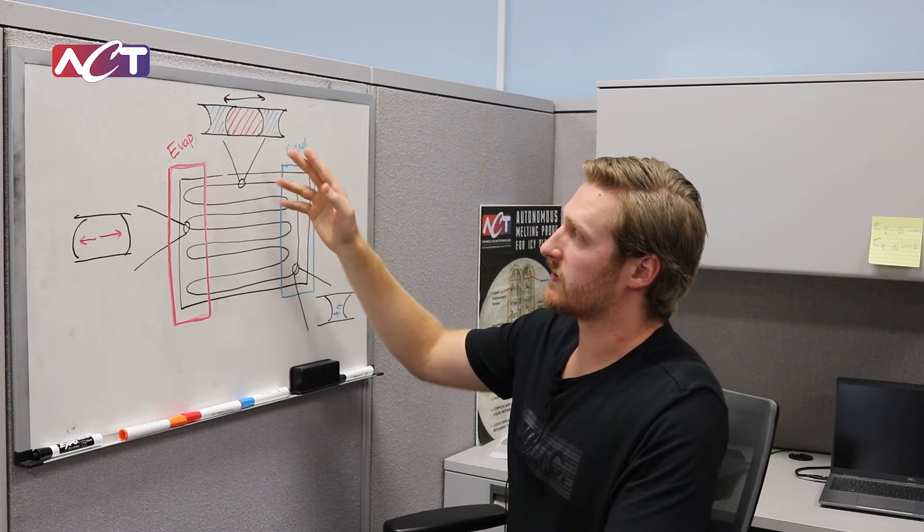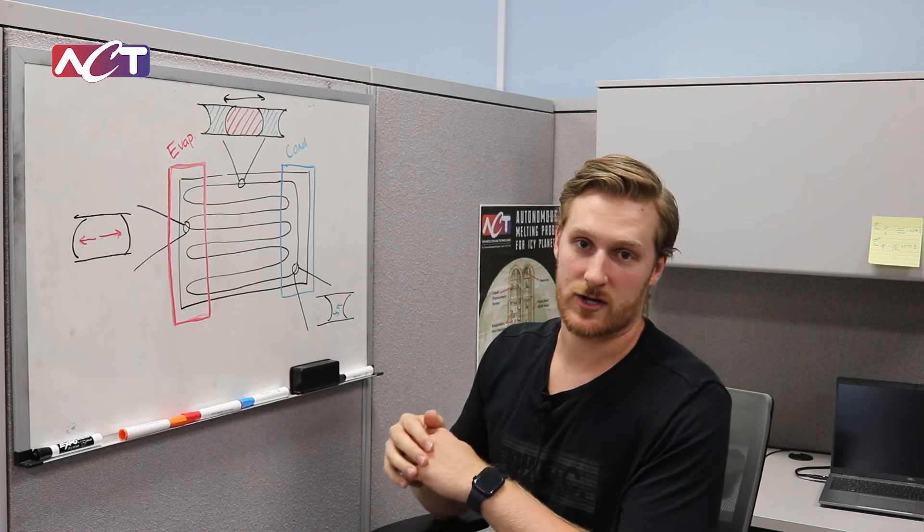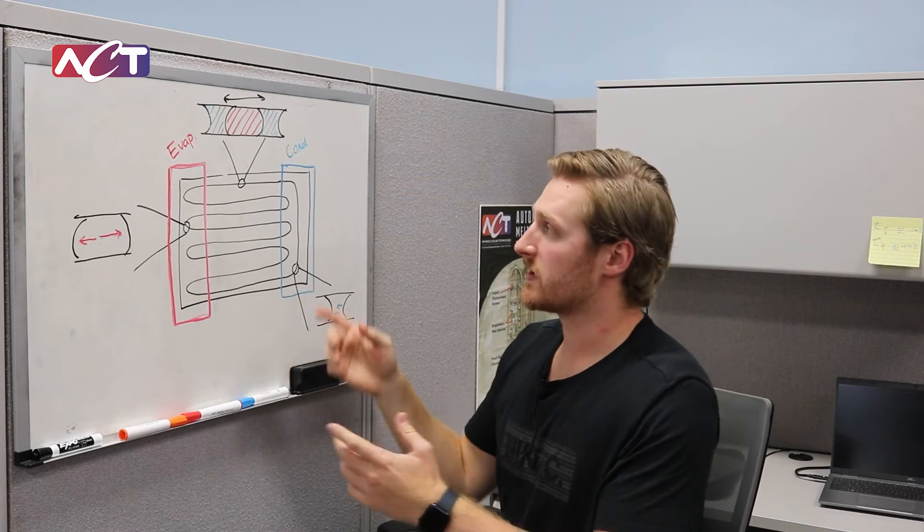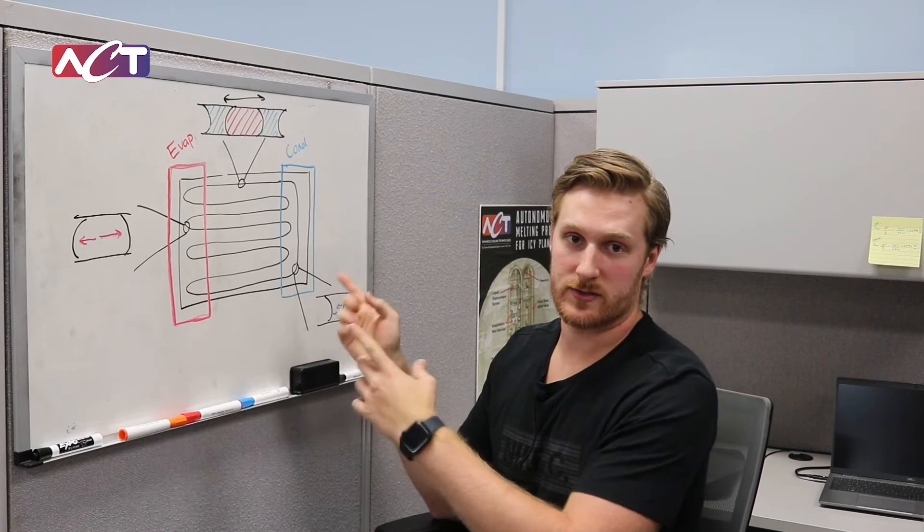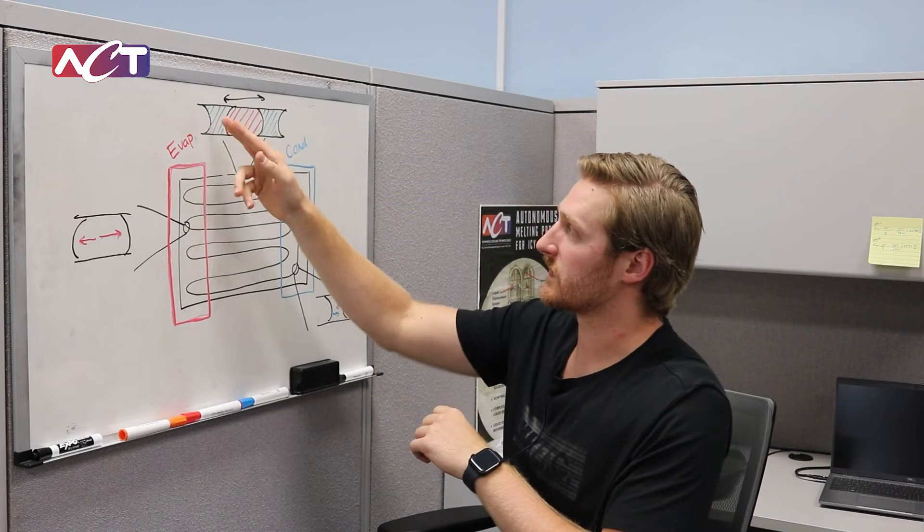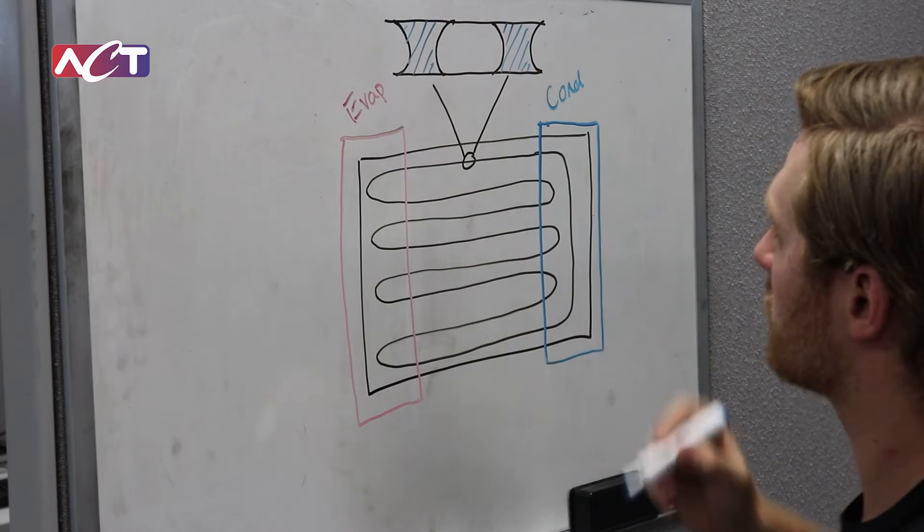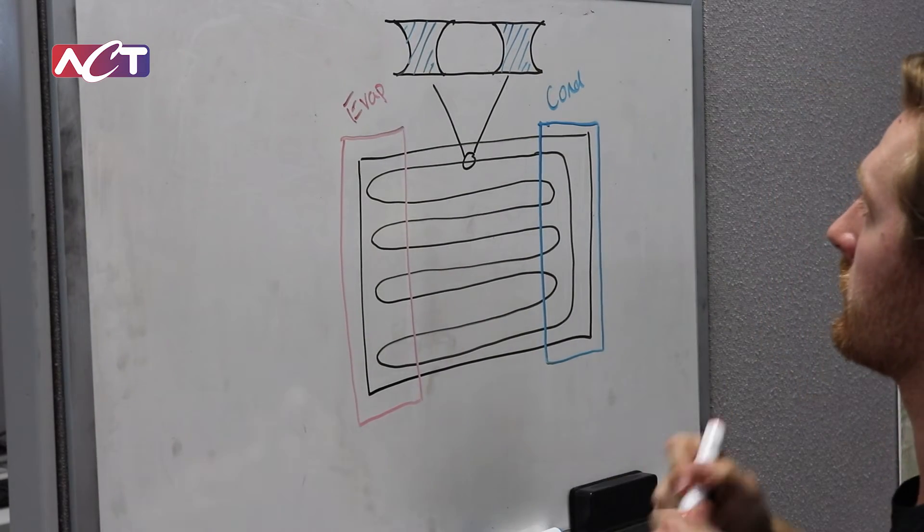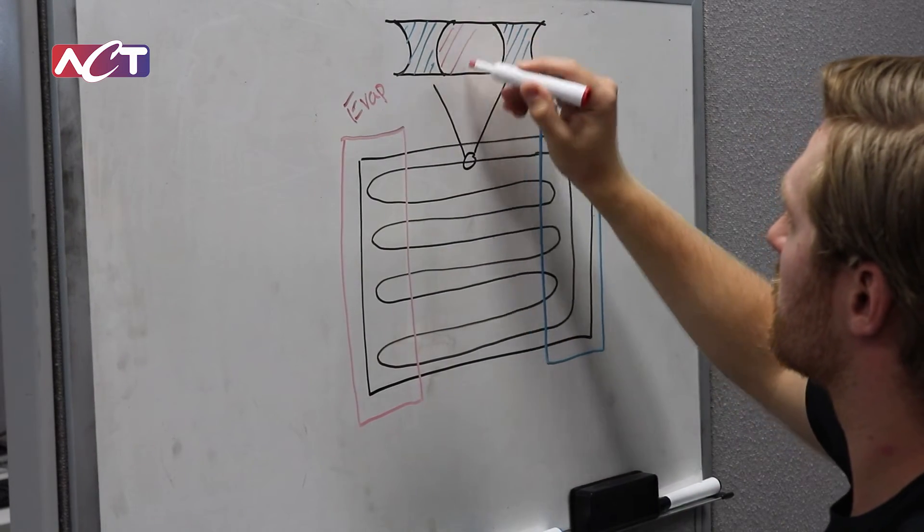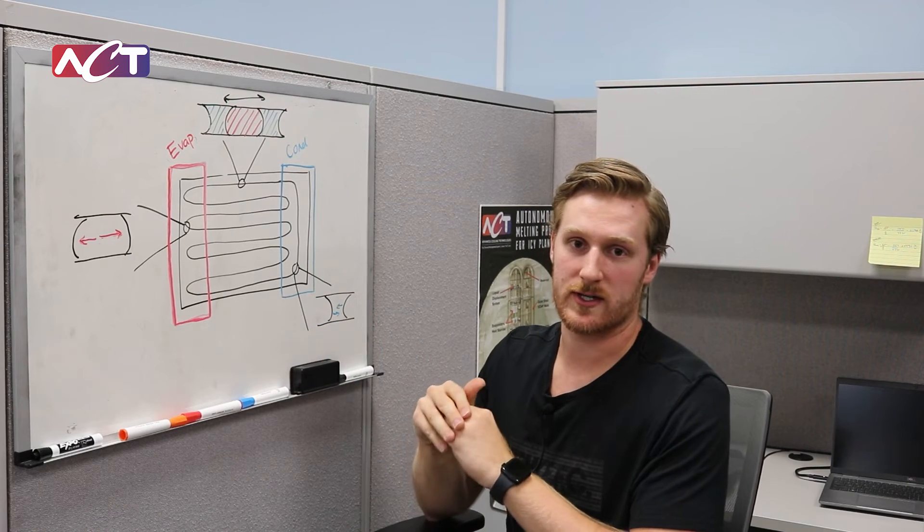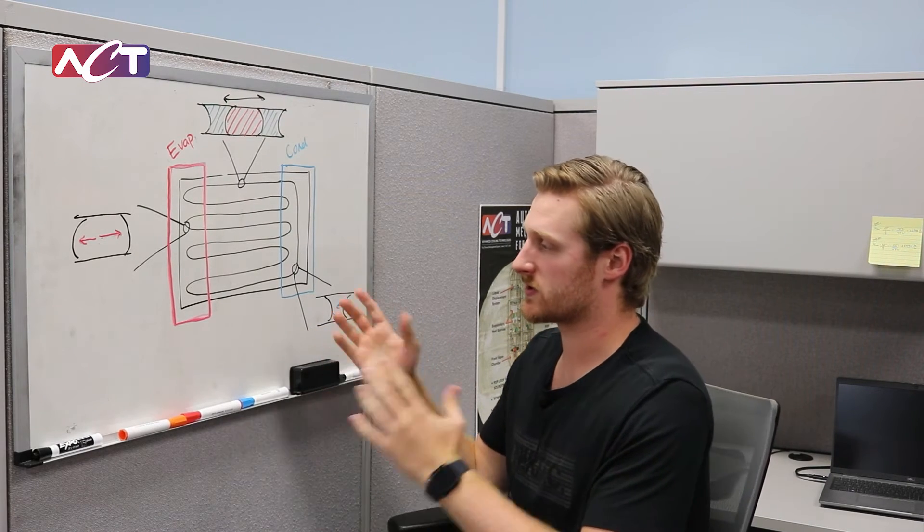Up above here I've highlighted that with the expansion and contraction of the fluid volume you get this oscillating motion where it goes back and forth. You have your liquid slugs and your vapor plug, and what this does is it helps efficiently transport heat from one location to the other.